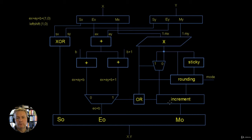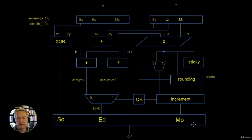Finally, what we can do is take the exclusive-OR of the signs, which is our big S0, take our exponent, and take our mantissa, and concatenate them into one single value. This is going to be our output X times Y.